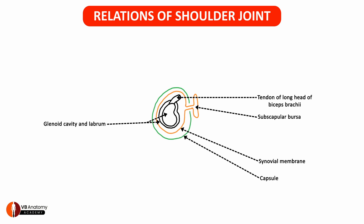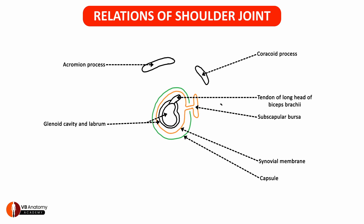Let us now add the bones related to the shoulder joint. Here superiorly, you can see the acromial process, and here you can see the coracoid process. Connecting the two is the coracoacromial ligament.